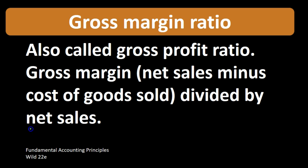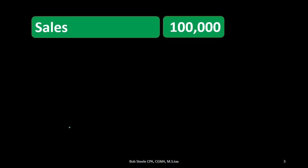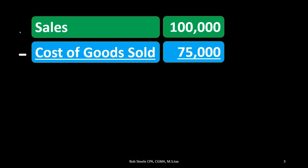Remember that net sales does not mean net income. Net sales is the sales revenue number minus the contra sales accounts — sales allowances and discounts. So when we say sales here, we mean net sales: the total sales figure from the sales section of an income statement, minus cost of goods sold.